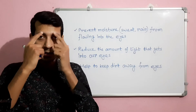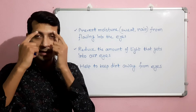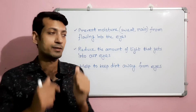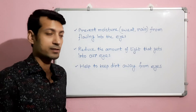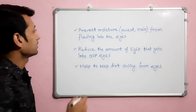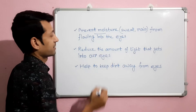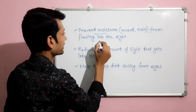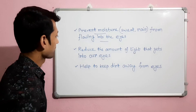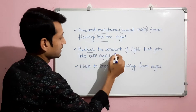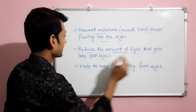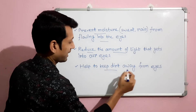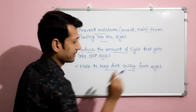These are eyebrows. They are curved lines of hair over the orbit. The main functions of eyebrows are: they prevent moisture — mostly sweat and rain — from flowing into the eyes, reduce the amount of light that gets into our eyes, and help to keep dirt away from the eyes.